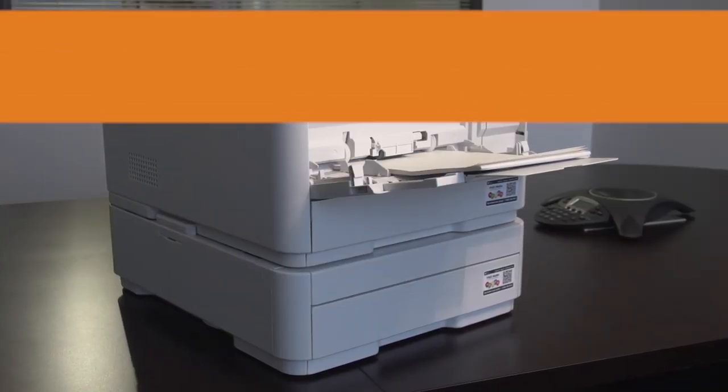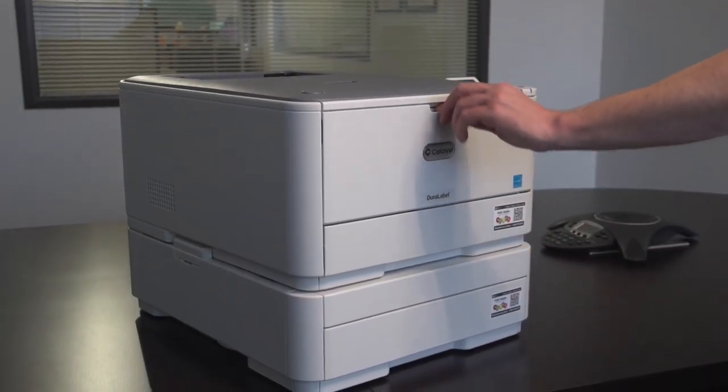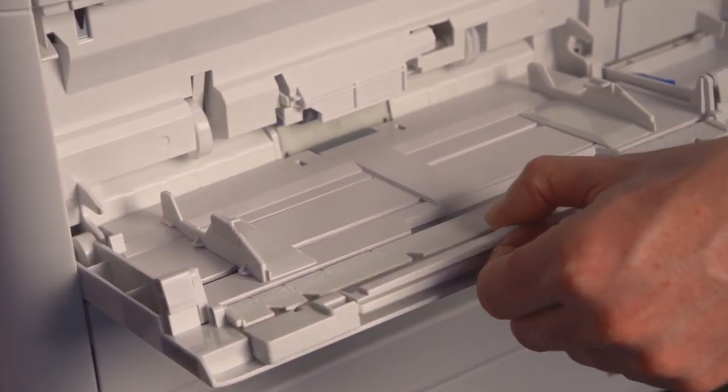Now we'll load the optional multi-purpose tray. Start by pulling the tray down by its handle to the open position. Pull out and unfold the paper support.